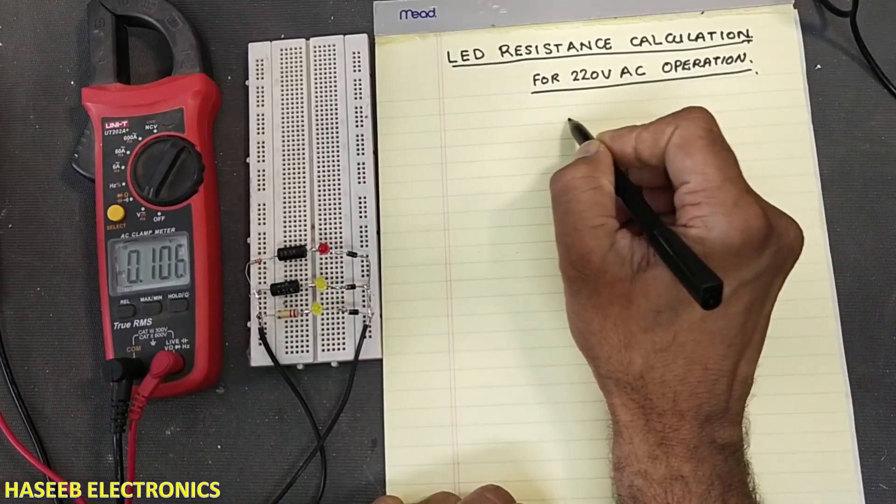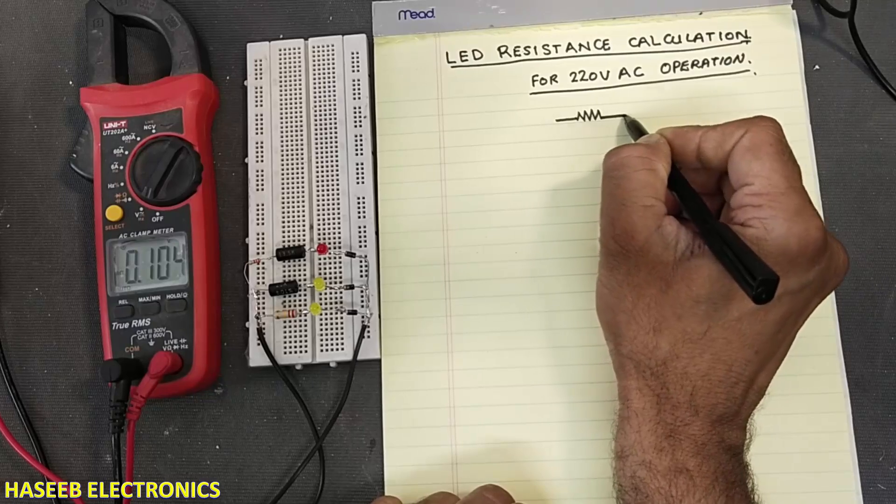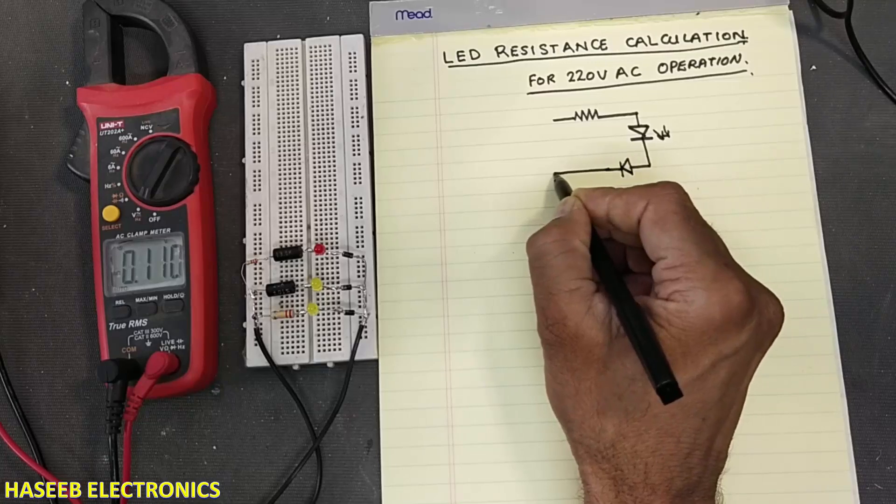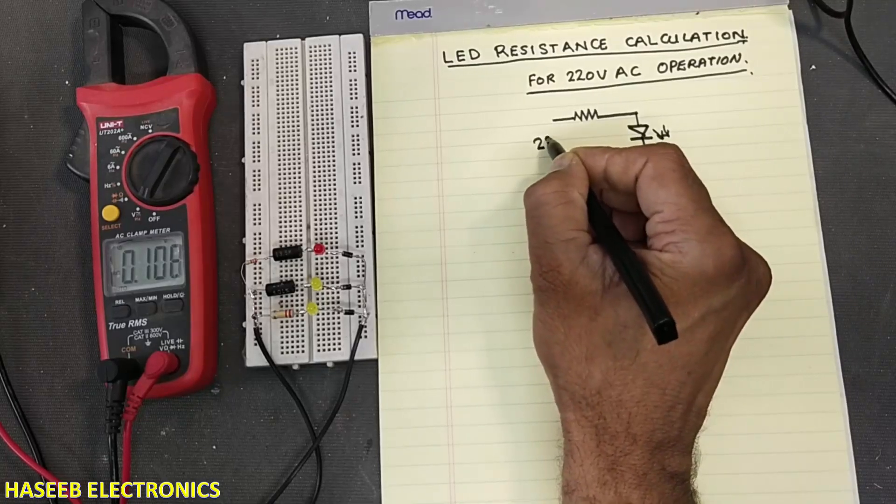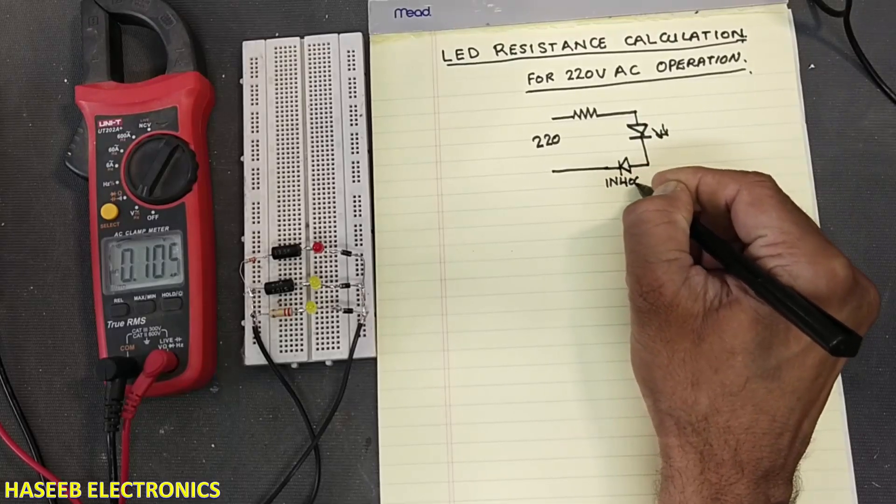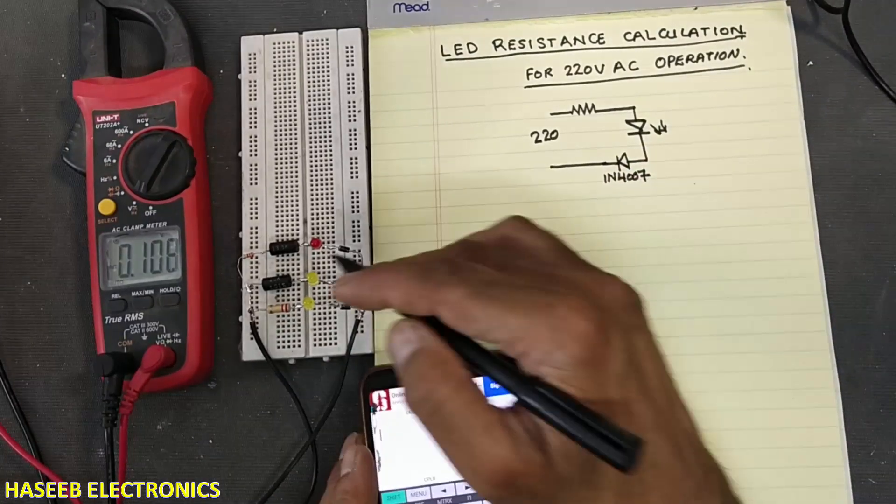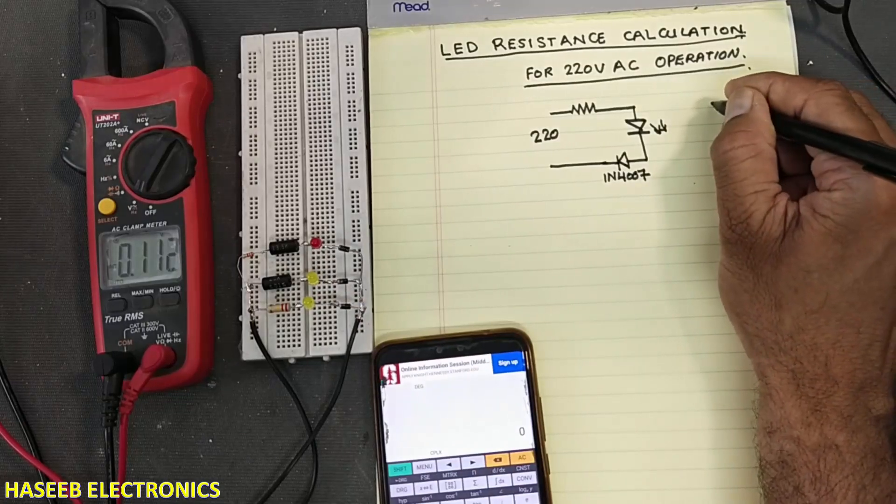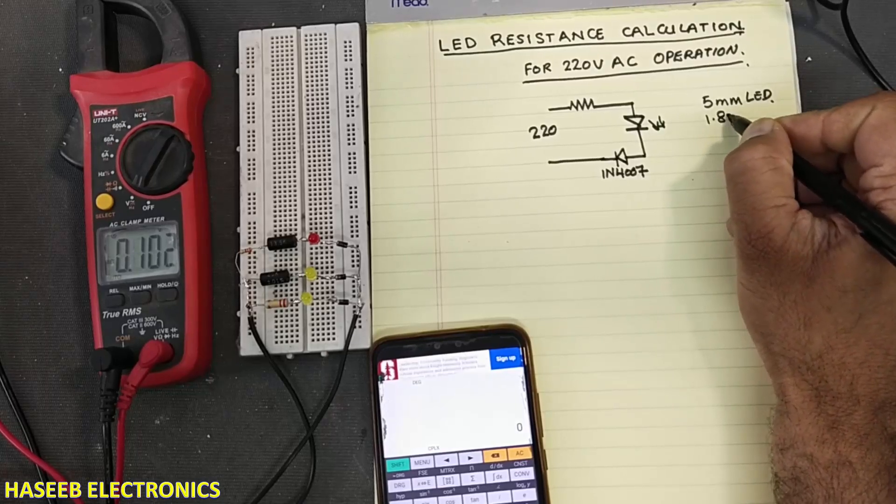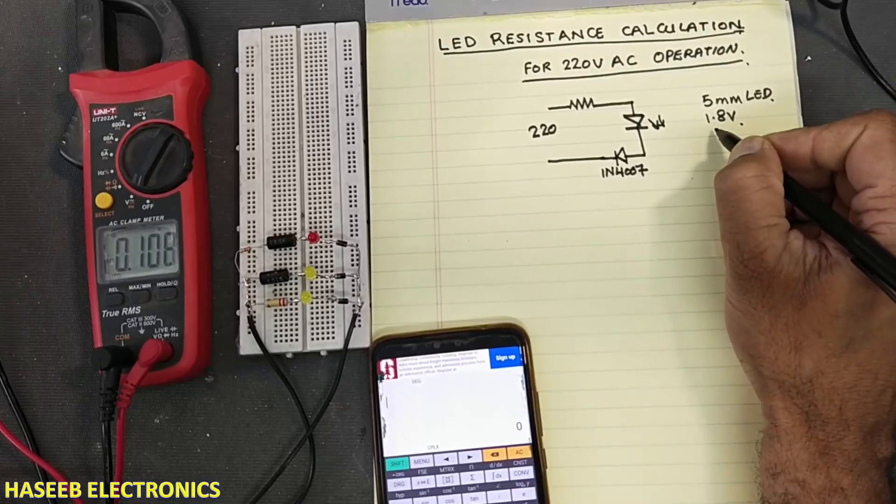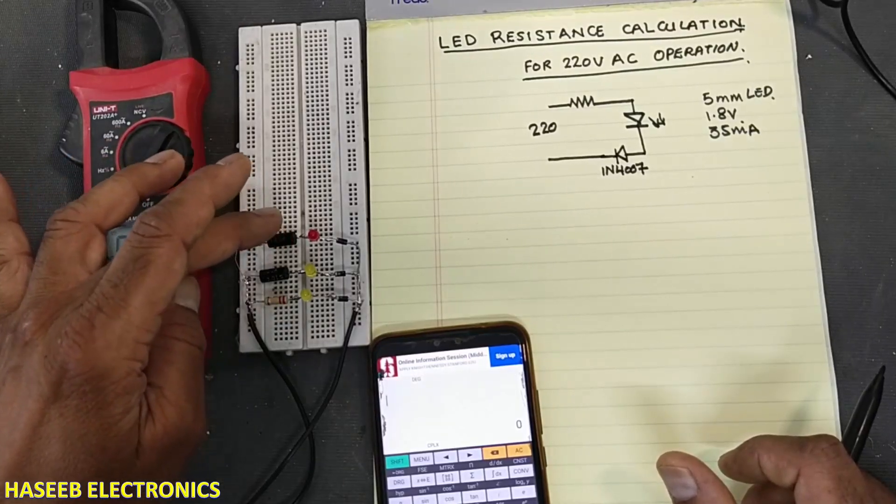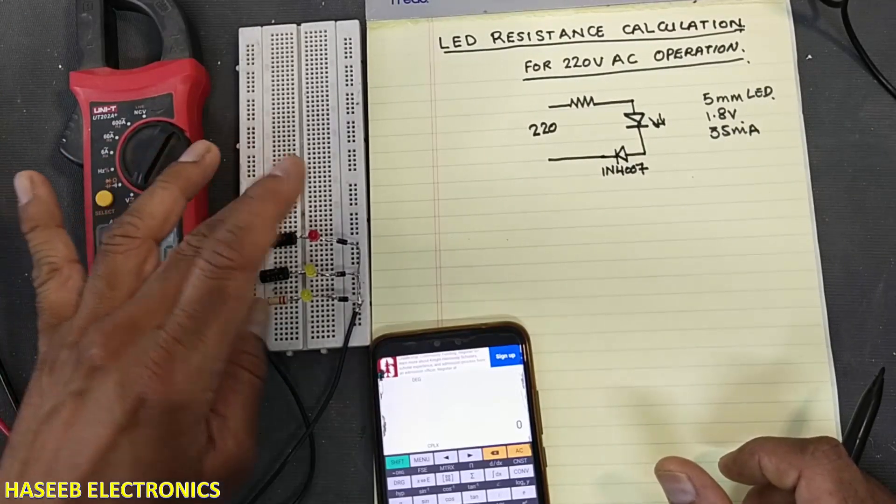If you see the circuit, very simple: a resistor, LED, and a rectifier diode. We will use it at 220 volts. Here it is using 1N4007 diode. I am using 5 mm LED, so its V forward drop voltage is 1.8 volt. Maximum 35 milliampere current. For best practice I will calculate it for 20 milliampere for mid-range.